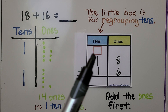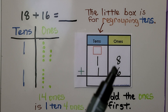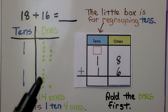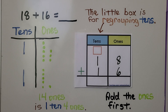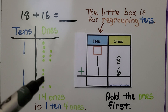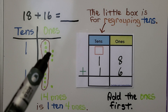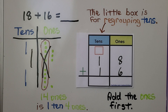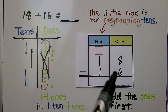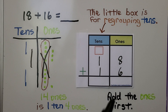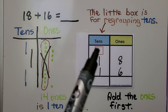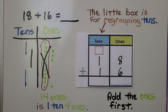We see this little box — that's for regrouping tens. We know eight plus six is fourteen. What we do is we take this one ten — this five and this five — and we group it as a ten. We move it to the tens place, crossing it off and drawing another line in the tens place. So we're adding eight plus six, which equals fourteen, and we regroup the ten to the tens column.